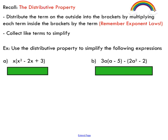Remember, the distributive property is a method that we can use to eliminate parentheses in an algebraic expression. In order to do this, we take the term on the outside of the brackets and we distribute it into the brackets by means of multiplication, which makes sense because this expression says x times the expression inside the brackets. So we're going to distribute that x into the brackets by means of multiplication.